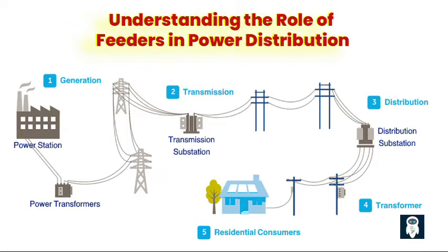Second, for load distribution: feeders help distribute the electrical load across the distribution network. They divide the total power demand into smaller portions and deliver electricity to different areas or groups of consumers. This ensures a balanced distribution of power and prevents overloading of specific feeders or circuits.